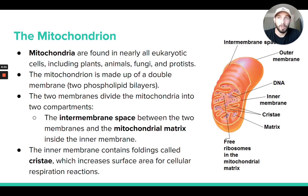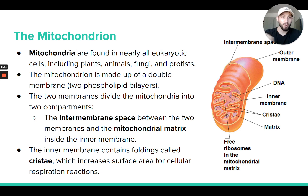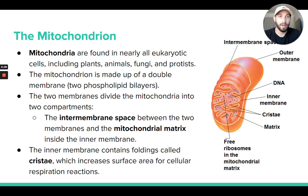Specifically, those two organelles are the mitochondria — the powerhouse of the cell — and the chloroplast. Mitochondria are found in all eukaryotic cells and organisms, while the chloroplast is another energy-related organelle found specifically in plant cells.